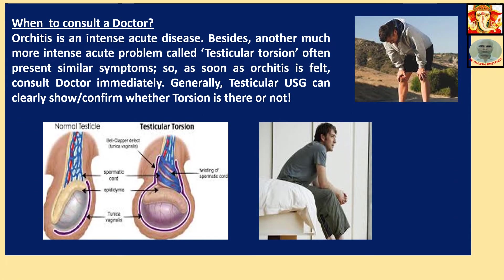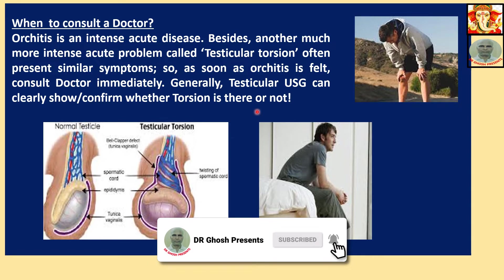When to consult a doctor: Orchitis is an intense acute disease. Besides, another much more intense acute problem called testicular torsion — this is a grave situation and a much more acute problem than ordinary Orchitis. It often presents similar symptoms. So as soon as Orchitis is suspected, consult a doctor immediately, because you do not know whether it is plain Orchitis or testicular torsion. In case of plain Orchitis you may take some time, but in case of testicular torsion you must take immediate help — this is an emergency situation. Generally, testicular ultrasonography (USG) can clearly confirm whether torsion is there or not.